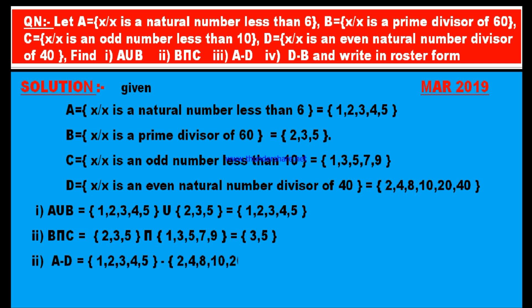A minus D: A = {1, 2, 3, 4, 5} minus D = {2, 4, 8, 10, 20, 40}. Strike out the common elements 2 and 4. The elements left in the first set only are 1, 3, and 5. Therefore, A minus D = {1, 3, 5}.